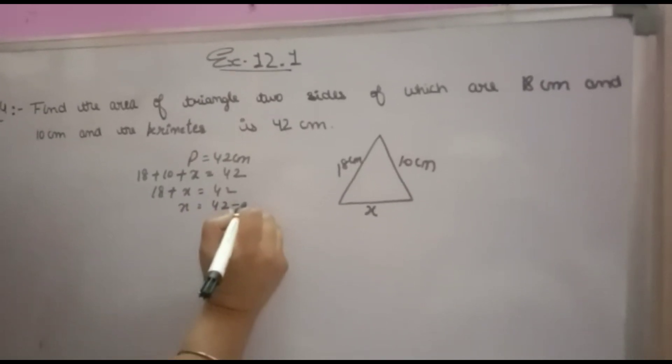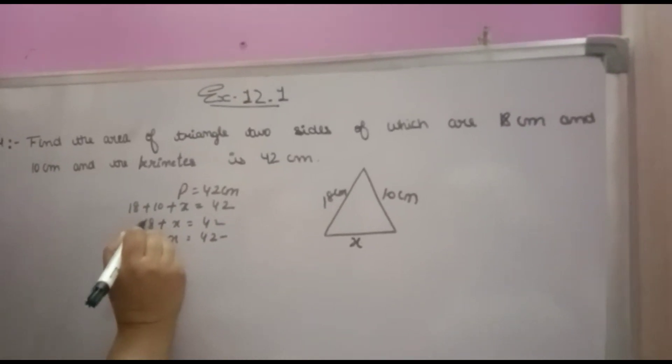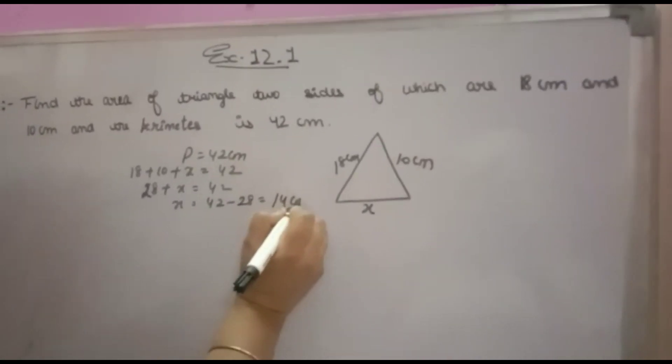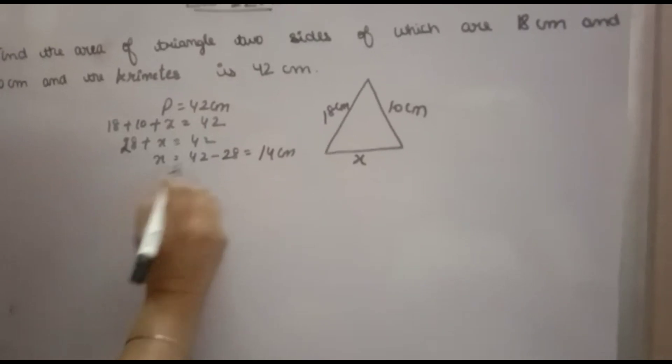So X = 42 - 28, which equals 14 centimeters. Now we know the third side is 14 centimeters.